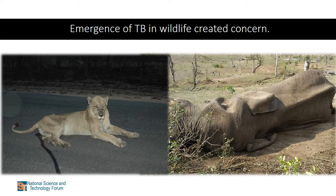The long-term consequences of wildlife TB in South Africa are unknown. A group of experts conducted a workshop in 2019 to model the impact of bovine TB on lion populations in Kruger National Park. Simulations covering the next 50 years showed that bovine TB was likely to cause an overall decrease in lion populations before stabilizing. Since Kruger National Park is one of the remaining strongholds for lions in South Africa, this scenario suggests a serious threat to the survival of this species.